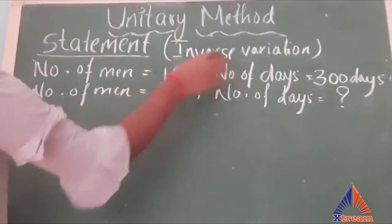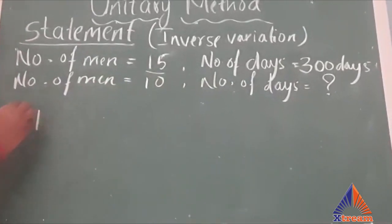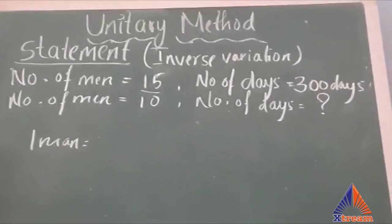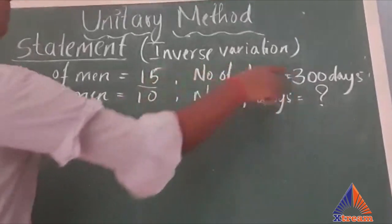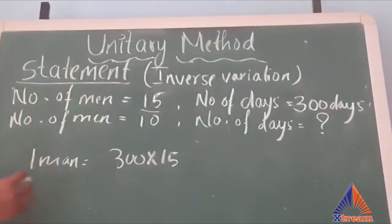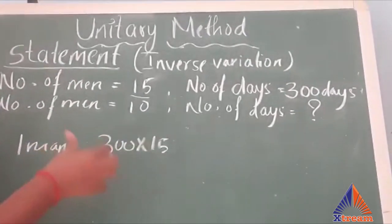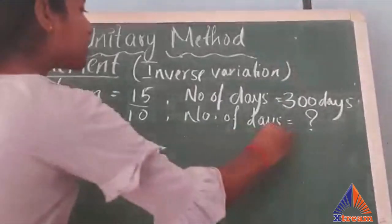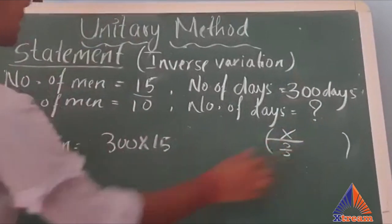Now let's solve. To calculate the number of days for 10 men, we should first find one man's work. To calculate one man's work, we multiply: 300 multiplied by 15. One man alone must do a lot of work, so we use multiplication. If we divided, we would get fewer days, which would be wrong. The sequence for inverse variation is: first multiply, then divide.